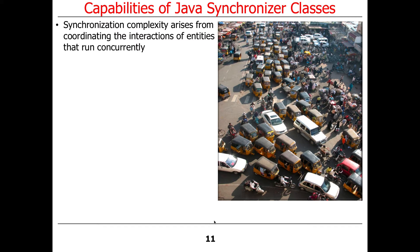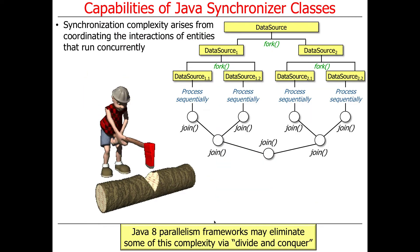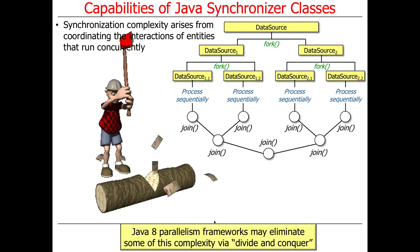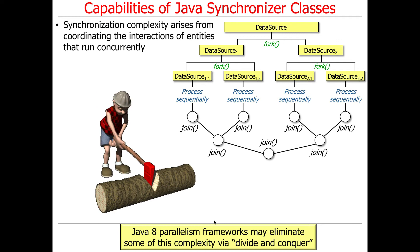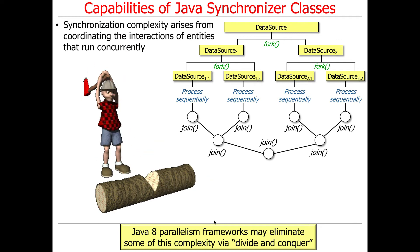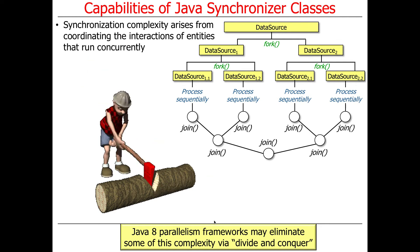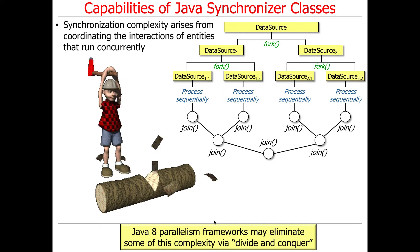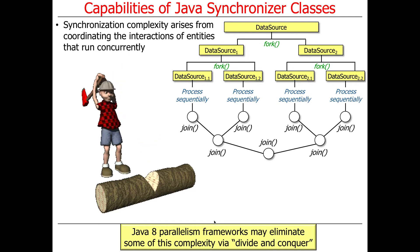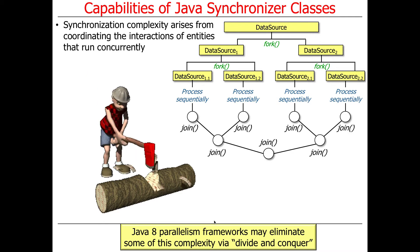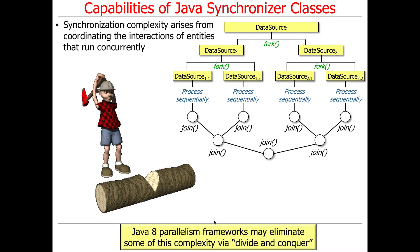The reason why this is complicated is because we're coordinating the interactions of entities that run concurrently. As we'll see later, and certainly if you take the sister course in the fall, when you start using the parallelism frameworks, a lot of this complexity disappears, because we end up rearranging the way our programs are structured to use a divide-and-conquer approach. We'll talk a little bit about that in this class, but that's really more for the parallelism discussion.